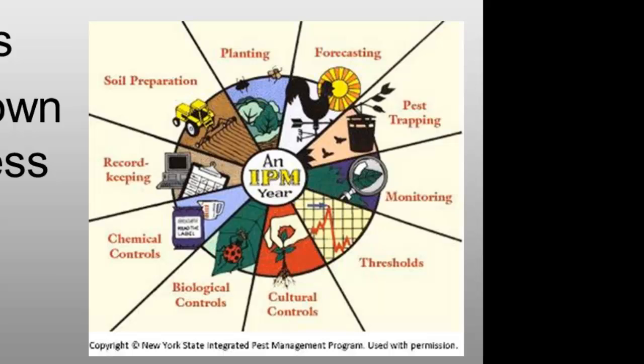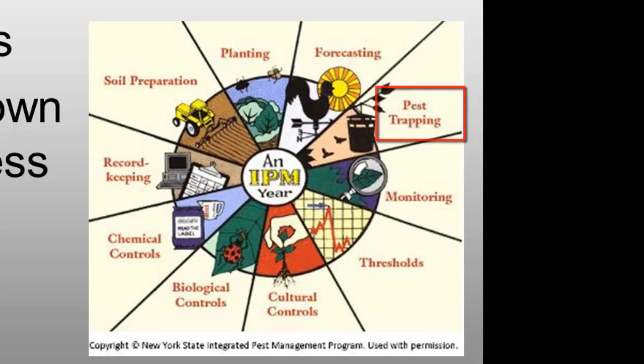Once monitoring, identification and action thresholds indicate that pest control is required and preventative methods are no longer effective or available, IPM programs then evaluate the proper control method for both effectiveness and risk. Effective, less risky pest controls are chosen first, including highly targeted chemicals such as pheromones to disrupt pest mating, or mechanical control such as trapping or weeding. If further monitoring, identification and action thresholds indicate that less risky controls aren't working, then we use additional pest control methods such as targeted spraying of pesticides, with broadcast spraying of non-specific pesticides being the very last resort.